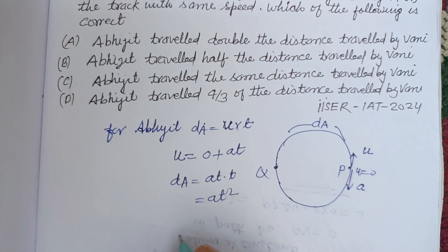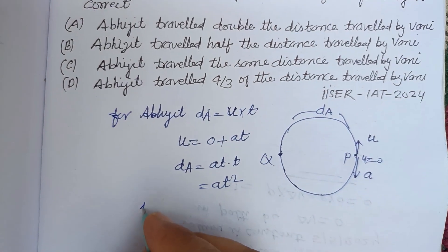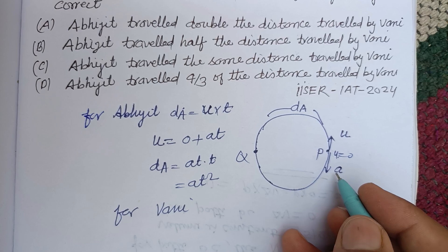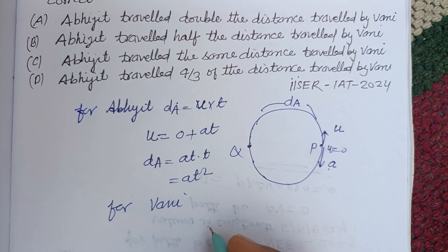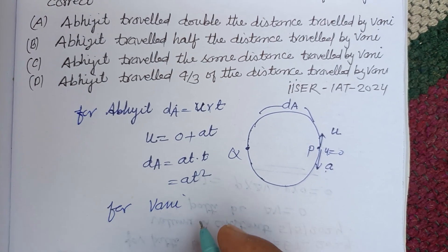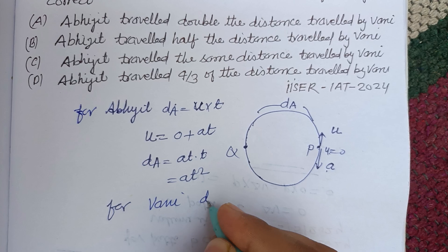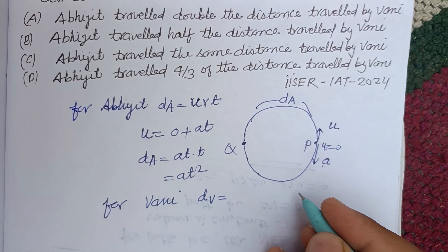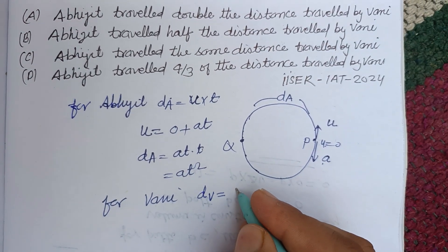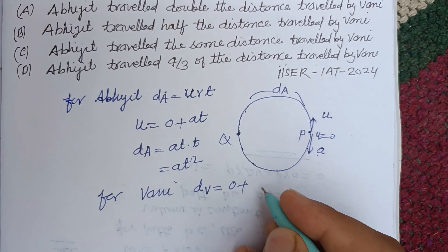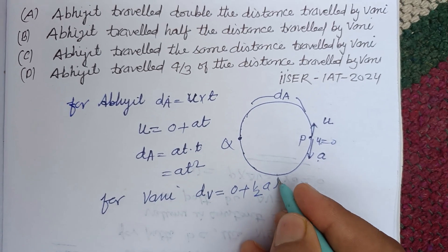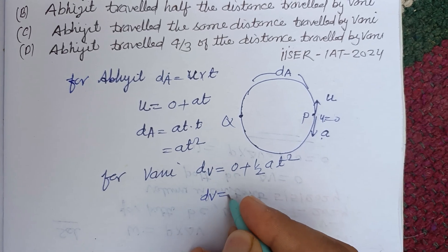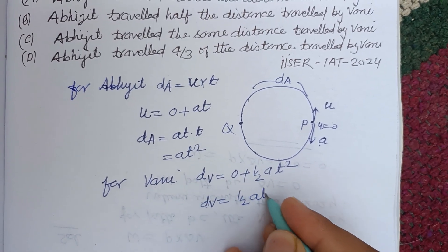For Vani, she is moving with constant acceleration. Therefore d_Vani equals u·t plus half·a·t². Since initial speed u is zero, d_V equals half·a·t².